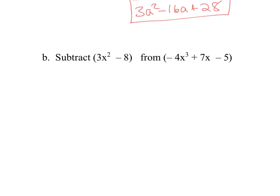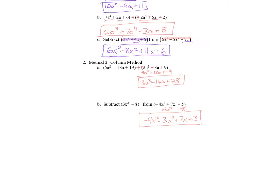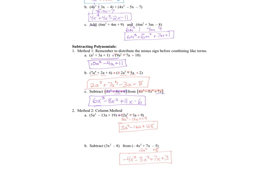For the last one I subtract: minus 3x squared has nothing to match so it stays; minus 8 becomes plus 8. So my final answer is minus 4x cubed, minus 3x squared, plus 7x, plus 3. And that's the end of today's lecture — I hope this wasn't too difficult. If it is, let me know and we can talk. Bye!